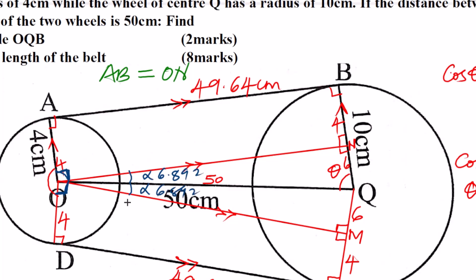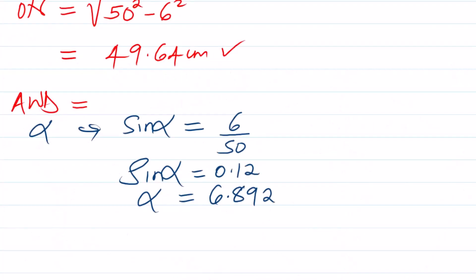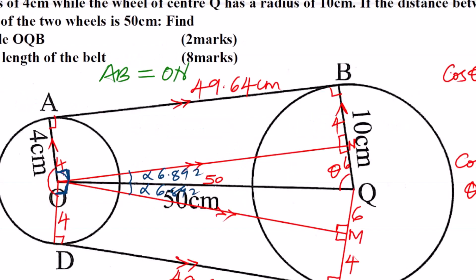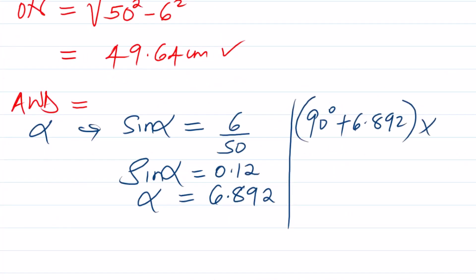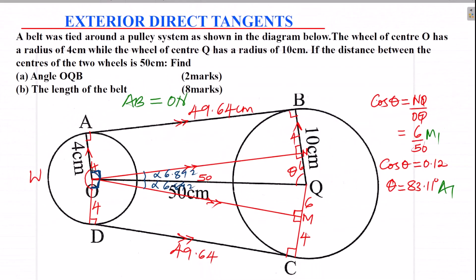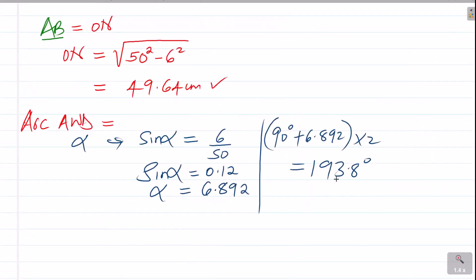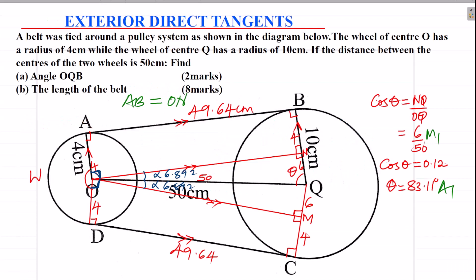Now there's angle AOQ. The angle AON is 90 — there's one angle that is 90 in the rectangle. To get the whole of that angle I take 90 plus 6.892 degrees, because I've taken angle AON which is 90 plus that angle 6.892. The whole of that angle — multiply by two because the other part is still the same — gives 193.8 degrees. So the other side I haven't calculated because it's the same; that is why I've multiplied by two.